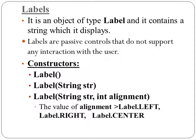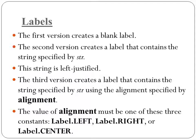The third Label constructor takes two arguments: a string and an alignment. Alignment may be Label.LEFT, Label.RIGHT, or Label.CENTER, specifying where the label text is displayed in the window. The first version creates a blank label, the second creates a label with the name str and is automatically left-justified, and the third version creates a label with a specified alignment argument.